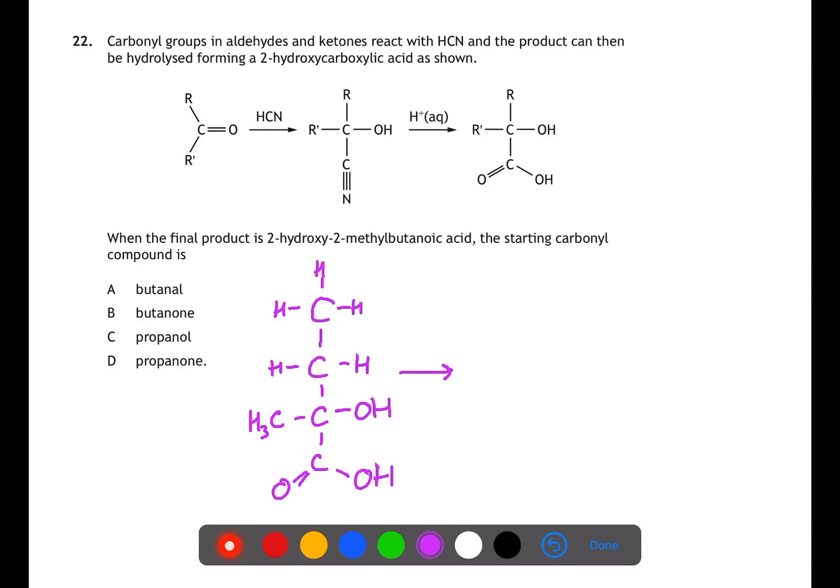Moving back to the middle section, we are replacing the C double bond O, OH group with the C triple bond N. This will create a structure like the middle structure, where we still have the OH and we have the R and the R' groups replaced with the carbons from this structure.